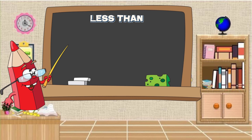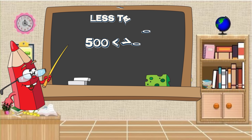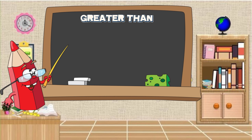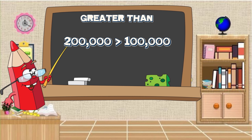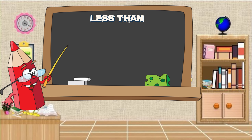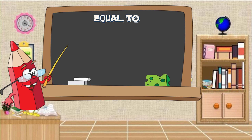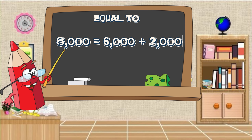Let's try another one. Less than: five hundred is less than seven hundred. Greater than: two hundred thousand is greater than one hundred thousand. Less than: forty thousand is less than eighty thousand. Equal to: eight thousand is equal to six thousand plus two thousand.